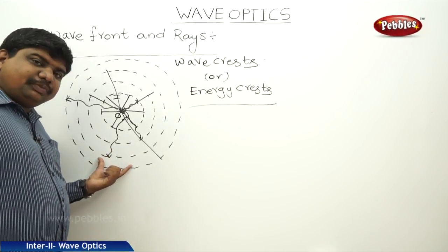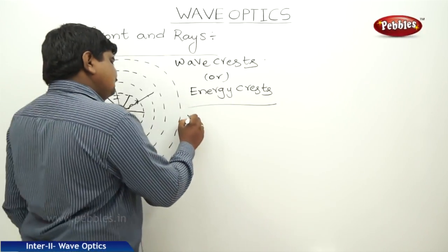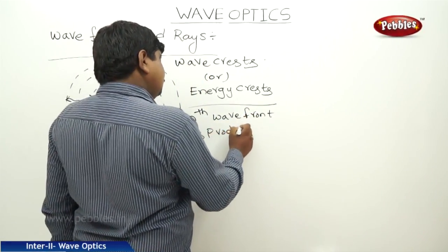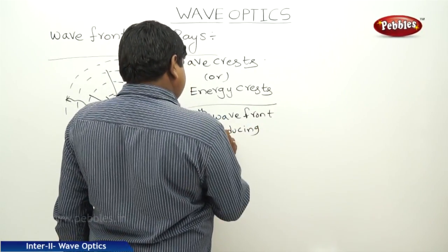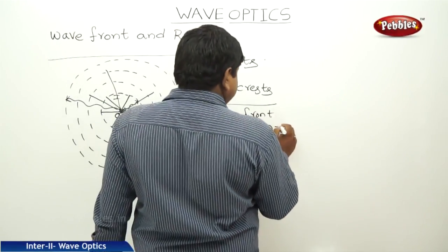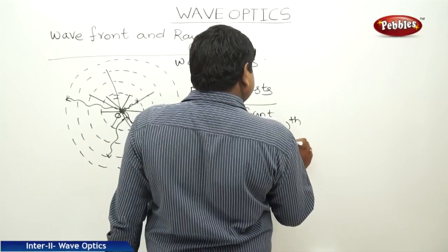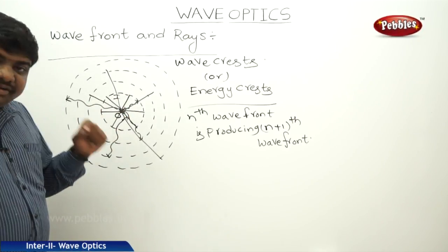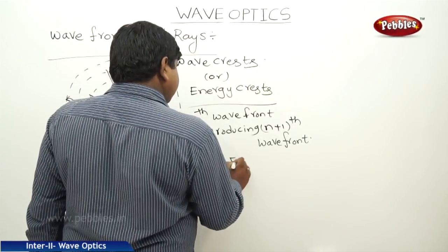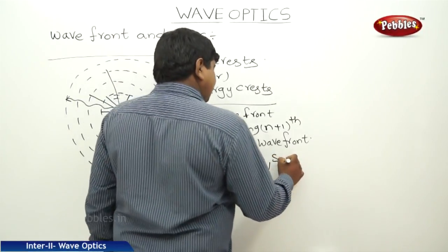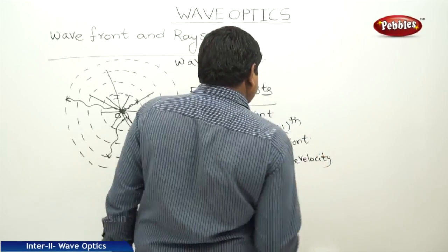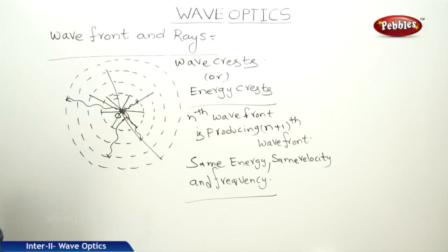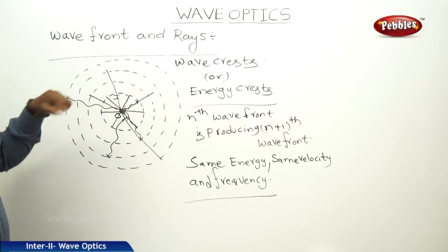The third wave front is giving sufficient energy to produce the fourth. So, the nth wave front is producing the (n+1)th wave front. All these particles are moving in the same phase. In the same phase, these particles will have the same energy, same velocity, and same frequency. So, wave fronts are created like this — the locus of all the points which are moving in the same phase.